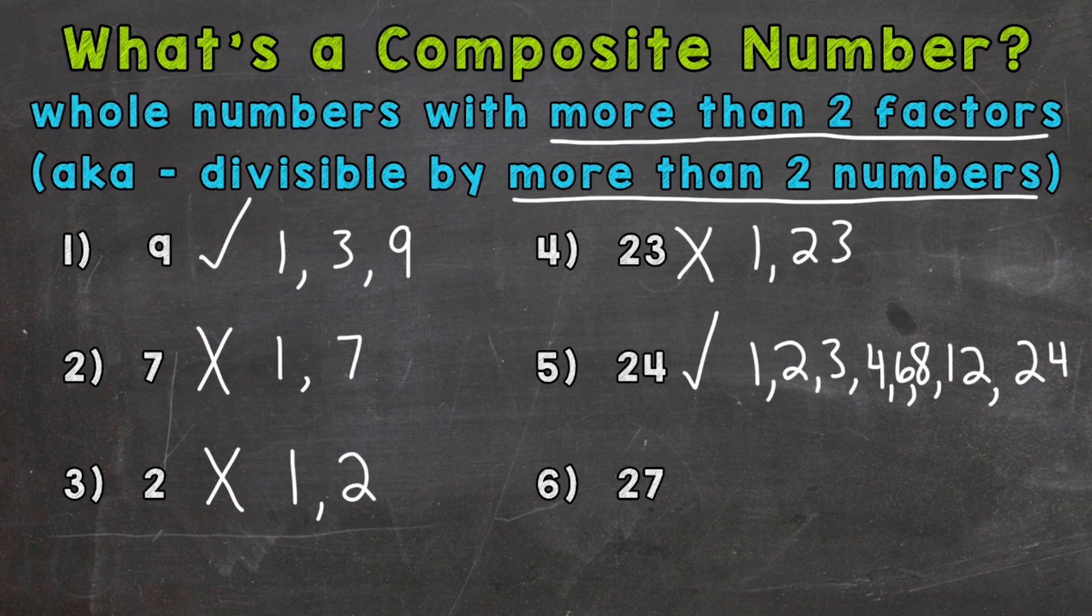And lastly, we have number six here, 27. Now don't think that because 27 is odd, it's not composite and is going to be prime. We need to think of the factors. 27 is actually composite. It's going to be composite because we know 1 and 27 are factors, but 3 and 9 are also factors. 3 times 9 equals 27. So 27 has more than two factors. Therefore, it's a composite number.